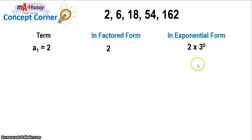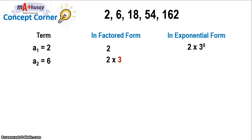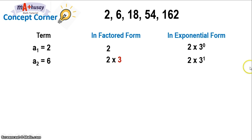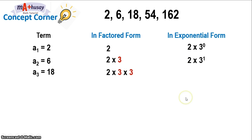We take the second term, which is 6. It can be rewritten in factored form as 2 times 3, where 3 is the common ratio. In exponential form, that's 2 times 3 to the power of 1. The third term, 18, can be rewritten as 2 times 3 times 3 in factored form, or in exponential form as 2 times 3 squared.